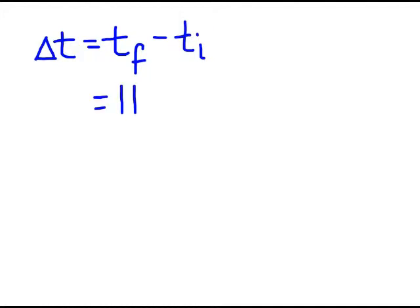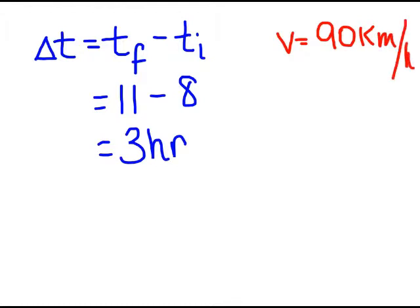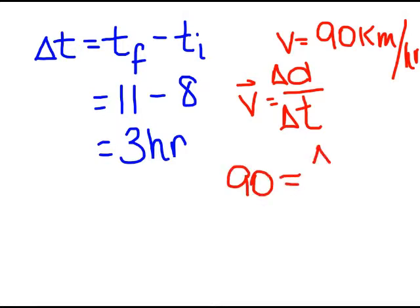The change in time would be time final minus time initial. We know time final was 11 a.m. minus time initial, 8 a.m. So, 11 minus 8 is 3 hours. We know velocity. They're traveling at 90 kilometers per hour. We know formula velocity is equal to the distance divided by time. Our change in distance over the change in time. We put in what we know. We know 90 is equal to the change in distance divided by our change in time, which we know is 3 hours.